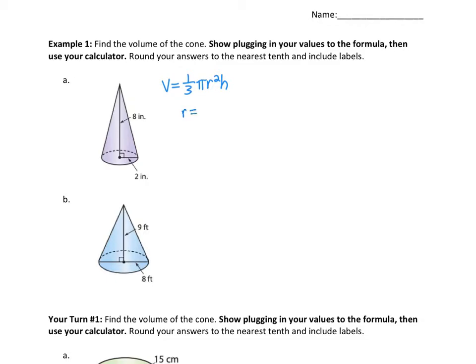Let's identify our parts. The radius is 2 inches and the height is 8 inches. When we plug in our labels, r squared gives us inches squared, and multiplying by the height in inches gives us inches cubed. So 2 inches squared is 4 inches squared, and times 8 inches gives 32 inches cubed.